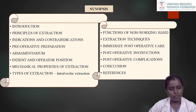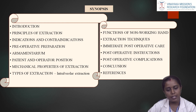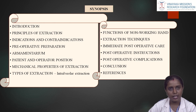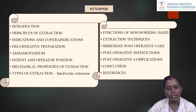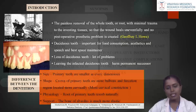Here are the contents of this topic: first, the introduction to pediatric exodontia and the principles of extraction, the indications and contraindications of extraction, the preoperative preparation, armamentarium, patient and operator position, mechanical properties of extraction, and types of extraction — specifically intra-alveolar extraction. Since trans-alveolar extraction is not used in pediatric dentistry, we will discuss intra-alveolar extraction only. We will also cover the functions of the non-working hand, extraction techniques, immediate post-operative care, post-operative instructions, post-operative complications, and then the conclusion and references.